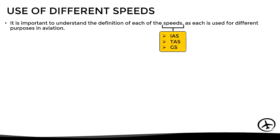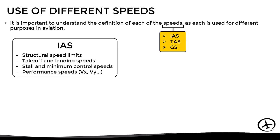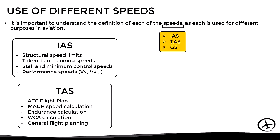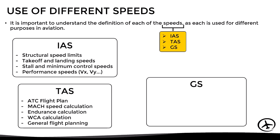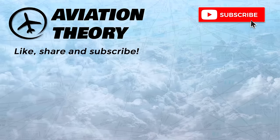Each speed is used for different purposes. Indicated airspeed, which depends directly on dynamic pressure, is useful for structural speed limitations, takeoff and landing speeds, stall speeds, and performance speeds such as best glide speed, Vx and Vy. True airspeed is used in ATC flight plans, Mach speed calculations, endurance calculations, wind correction angle determination, and general flight planning. Ground speed is used for calculating flight time, fuel consumption, climb and descent parameters, and other flight planning data.